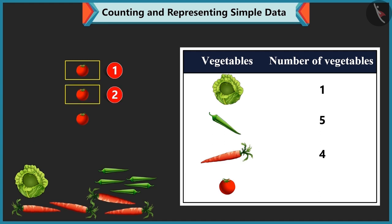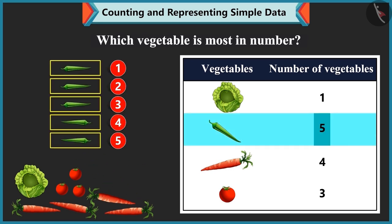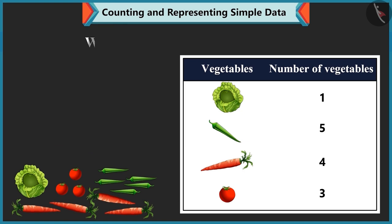Tomatoes are 1, 2 and 3 over here. So we write 3 against tomato. Ok, Bubbly, now tell me which vegetable is most in number? There are 5 chillies. So it is most. You are right, Bubbly. Now tell me, which vegetable is least in number with us?